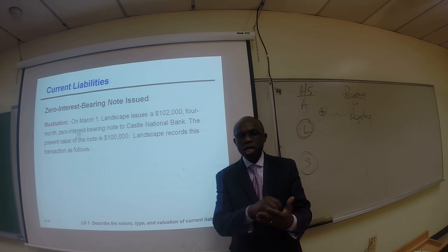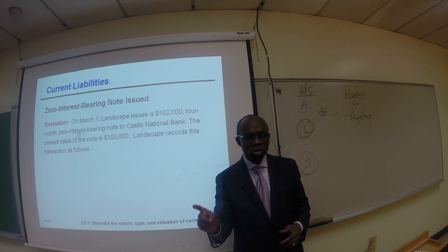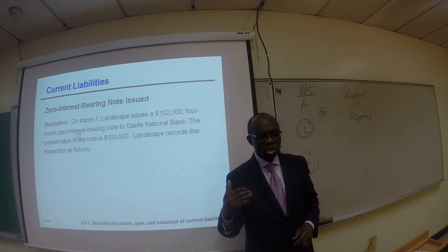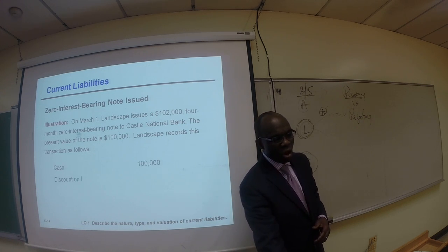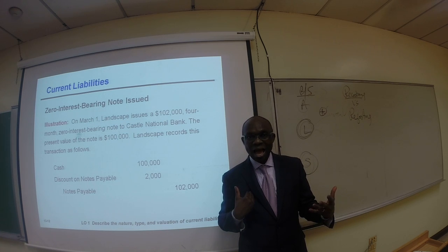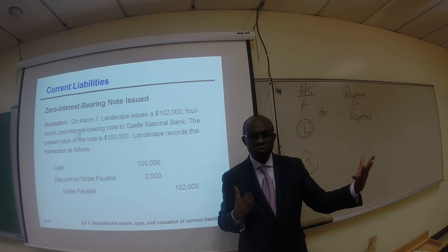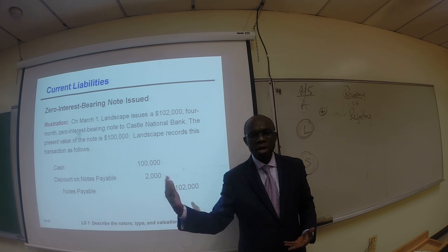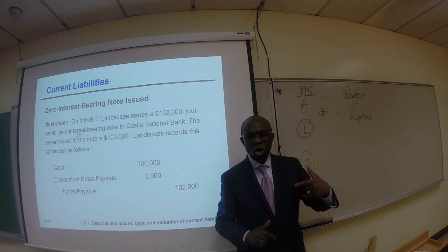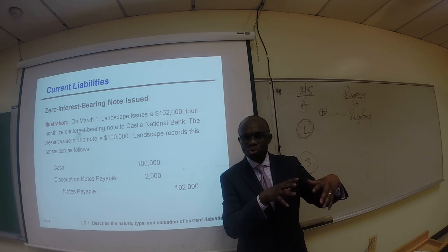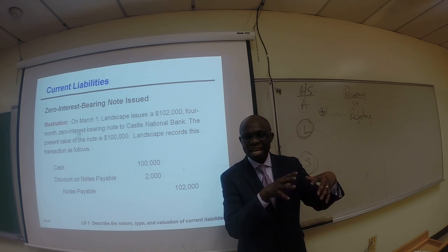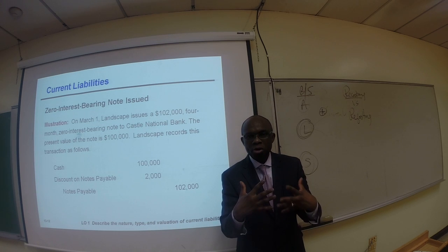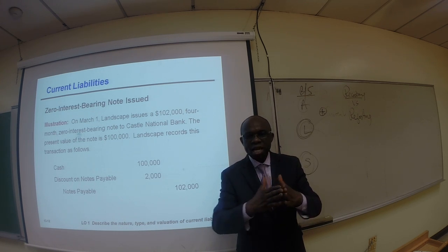On March 1st we issue a note for $102,000 — a four-month zero interest bearing note, because interest is not paid on a periodic basis and there is no interest rate on the face of the note. The present value of the note is $100,000. We receive only $100,000 from the bank, so we debit cash for $100,000 and credit notes payable for $102,000. The $2,000 difference is debited to discount on notes payable. We do not debit interest expense now because the time has not elapsed yet — this is just the beginning of the contractual relationship.